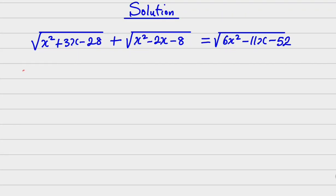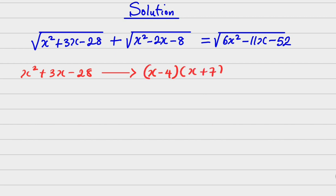To show you that x squared plus 3x minus 28, when factorized, will give you x minus 4 into x plus 7. This is settled already from our factorization, so I believe you know how to factorize.